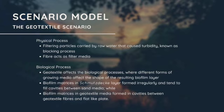Geotextile scenario also has physical and biological processes. Physical process happens when filtering particles carried by raw water that cause turbidity, known as blocking process, and fibers act as filter media. For biological process, geotextile affects the biological processes where different forms of growing media affect the shape of the resulting biofilm layer. Biofilm matrices in smoke jet layer form irregularly and tend to fill cavities between sand media, while biofilm matrices in geotextile media form in cavities between the geotextile fibers and flat light plates.